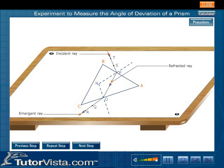Let PN and ON be the normals at the points P and O respectively, and let i be the angle of incidence and r the angle of refraction.